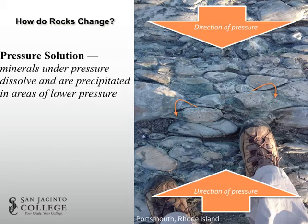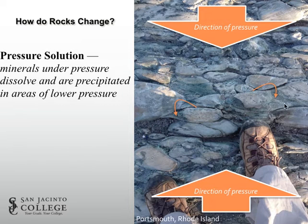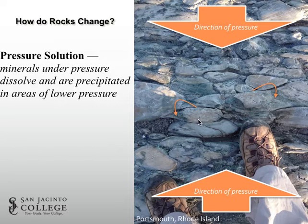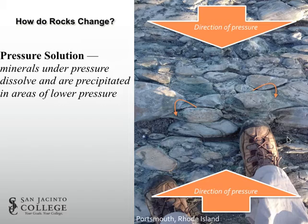We can also talk about pressure solution, which is really weird. Essentially, we are going to exert pressure on a rock — denoted by these big arrows here — and then dissolve some of the mineral in the area where that pressure is greatest. To the left and right sides there's relatively little pressure compared to the up and down directions. So the mineral dissolved off the top and bottom of these clasts in this conglomerate will be precipitated in a lower pressure area, probably creating these more elongated clasts.